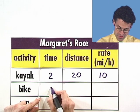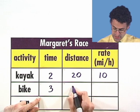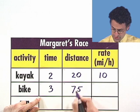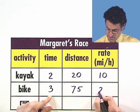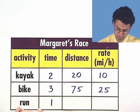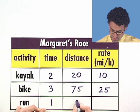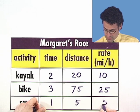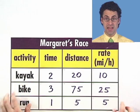For the bike, she was three hours on the bike. She traveled 75 miles. Her rate was 75 over 3, which is 25. And for the run, she ran for one hour. She covered five miles. So that's five miles per hour. Okay, great. So that's all the data.